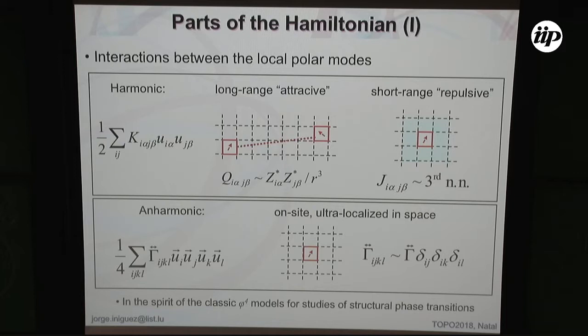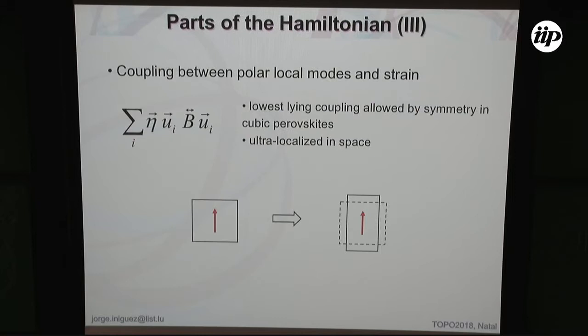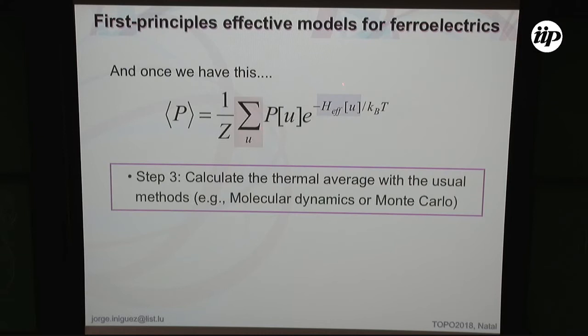At the harmonic level, what you have is long-range dipole-dipole interactions between these localized dipoles. You can also have short-range interactions, which are typically repulsive, meaning they don't favor the ferroelectric instability. You have anharmonic terms that can in principle be very complicated, but can be approximated very well by assuming they are only on-site terms. In some ways this is like a glorified Φ4 model for phase transitions, including dipole-dipole interactions. Fitting all the parameters also involves elastic energies and couplings between elasticity and dipoles.